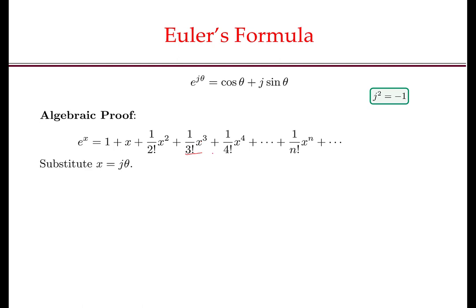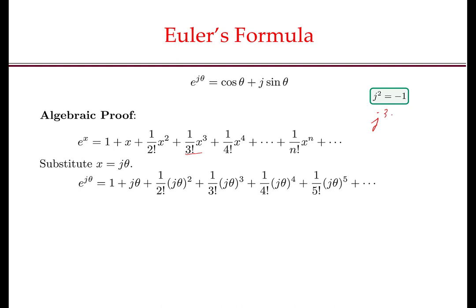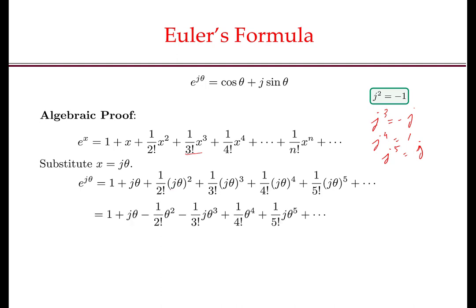We know that e to the power of x is defined by the infinite series of the form 1 plus x squared by factorial 2 plus x cubed by factorial 3 plus x⁴ by factorial 4, and so on. Now substitute x equals jθ. Then we get e to the power of jθ is 1 plus jθ plus 1 by factorial 2 times (jθ)², and so on. We will use the fact that since j² is minus 1, j³ will be minus j, j⁴ will be 1, j⁵ will be j, and so on. So from j²θ² we get minus θ². From j³θ³ we get minus jθ³. From j⁴θ⁴ we just get θ⁴. From j⁵θ⁵ we get jθ⁵, and so on.